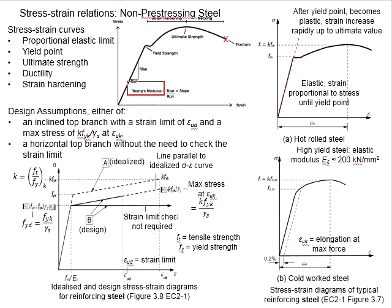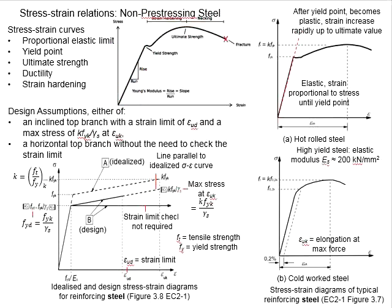This modulus is important for us to predict the response of the steel and for the design of reinforced concrete structures and also pre-stressed concrete structures. The design strength of the non-prestressing steel should range within this elastic stage, so that the properties of the steel are predictable.